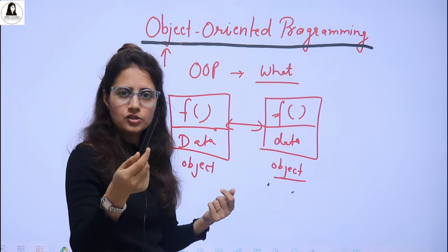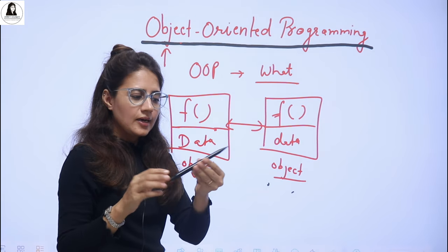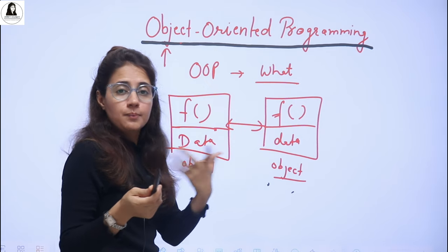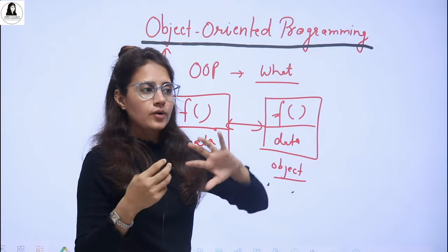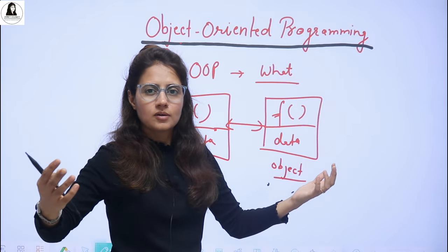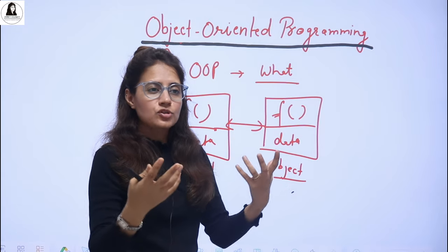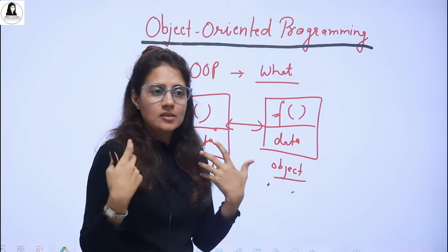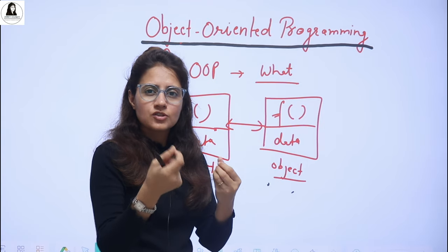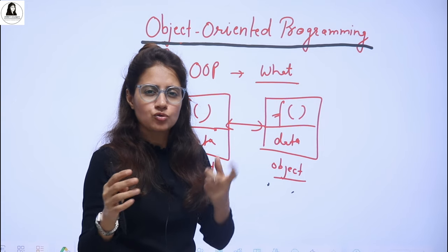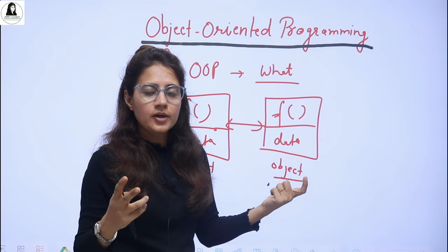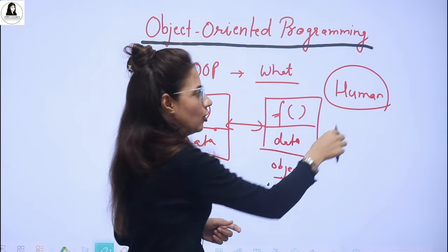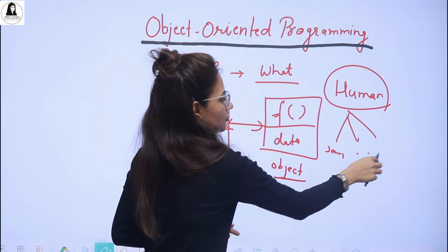Suppose I have one object like this pen. This object has some properties and attributes — like it is black in color, and it can write. And suppose I am an object, everyone in my class of 60 students are objects, each having their own attributes and properties. Attributes are like number of eyes, one nose, hair color, and so on. Properties are what they can do — I can code, I can sing, I can cook. So these are the functions or properties that define what I can do. And class is like a blueprint — Human is a class.